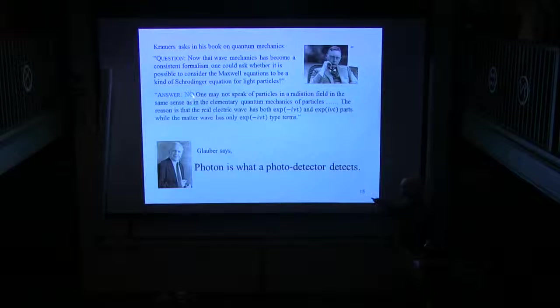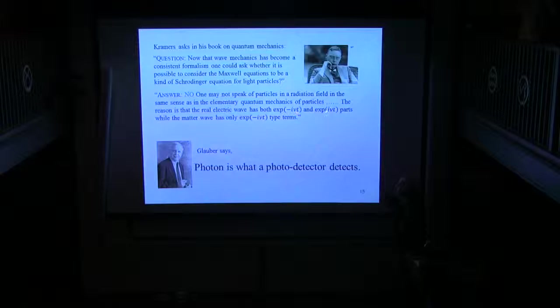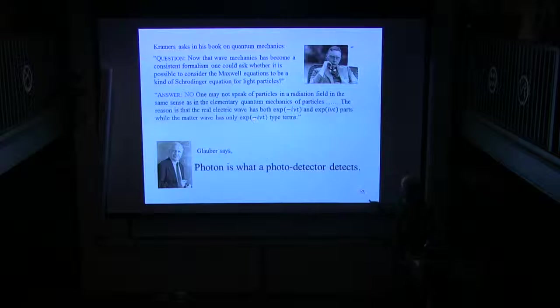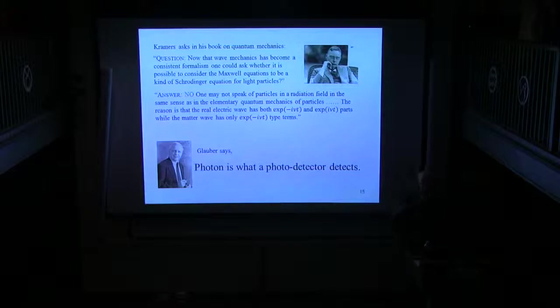He says, no, you can't, because electric fields and magnetic fields have sines and cosines. They have both e to the minus i and e to the plus i nu t parts, while matter wave has only e to the minus i nu t, right? That's a good answer. On the other hand, Professor Glauber says a photon is what a photodetector detects.